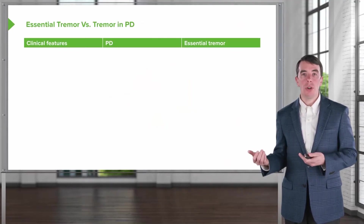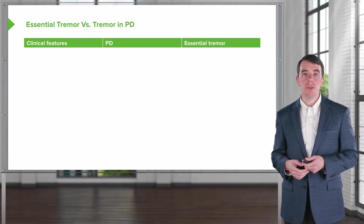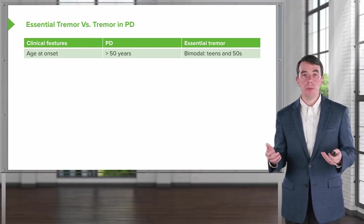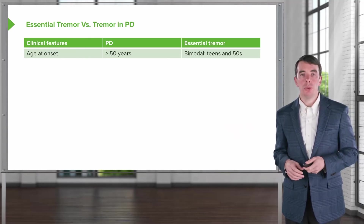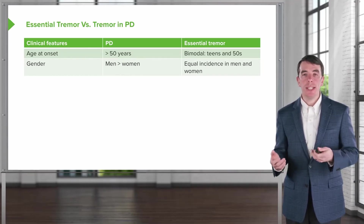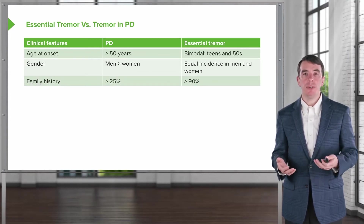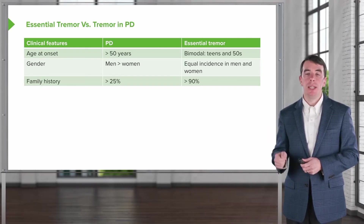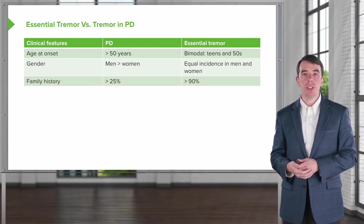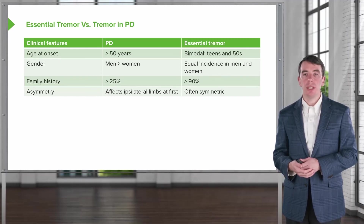Let's compare essential tremor and Parkinsonian tremor. In Parkinson's disease, onset is typically around age 50, whereas essential tremor has a bimodal distribution — in teens or over age 50. Parkinson's disease is more common in men, while essential tremor is equally reported in both sexes. Family history is present in up to 25% of Parkinson's cases, but is extremely common in essential tremor. Parkinsonian tremor is typically asymmetric, while essential tremor is symmetric.